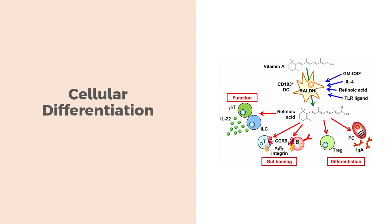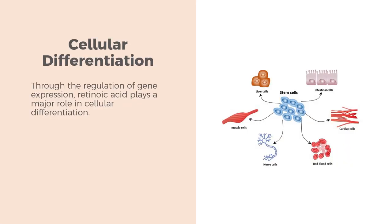Many different types of cells in the body perform highly specialized functions. The process whereby cells and tissues become programmed to carry out their special function is called differentiation. Through the regulation of gene expression, retinoic acid plays a major role in cellular differentiation. Vitamin A is necessary for normal differentiation of epithelial cells — the cells of all tissues lining the body, such as skin, mucous membranes, blood vessel walls, and the cornea. In vitamin A deficiency, cells lose their ability to differentiate properly.